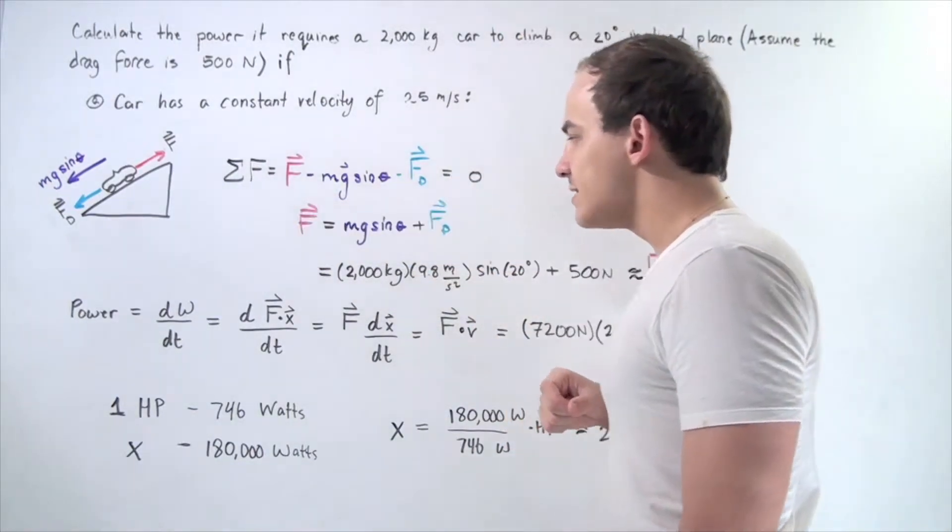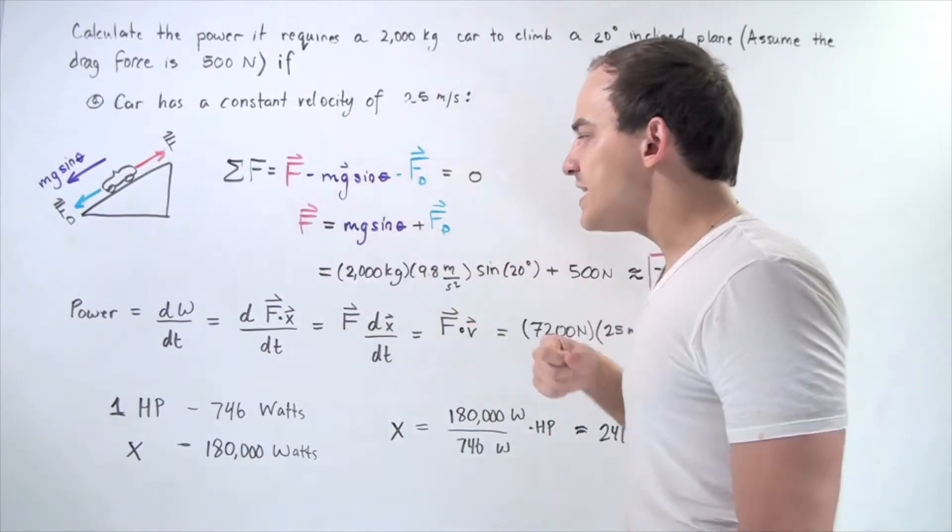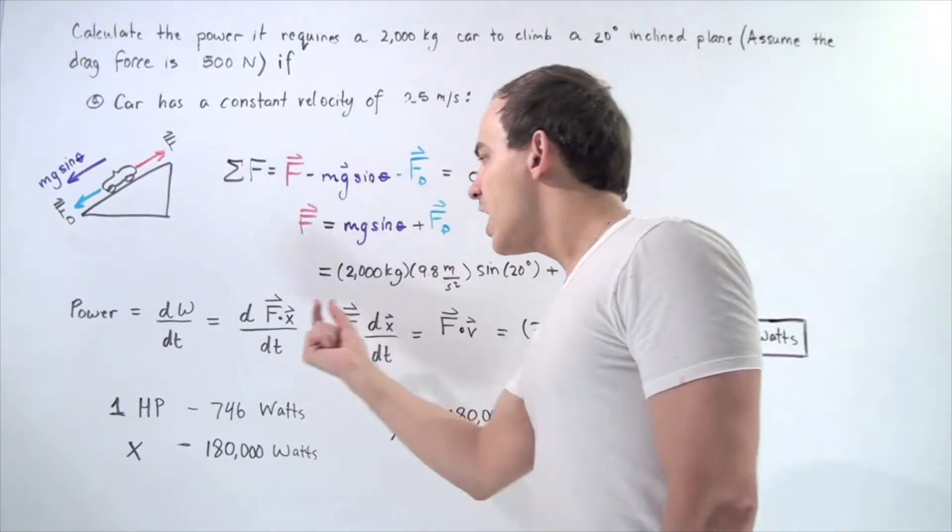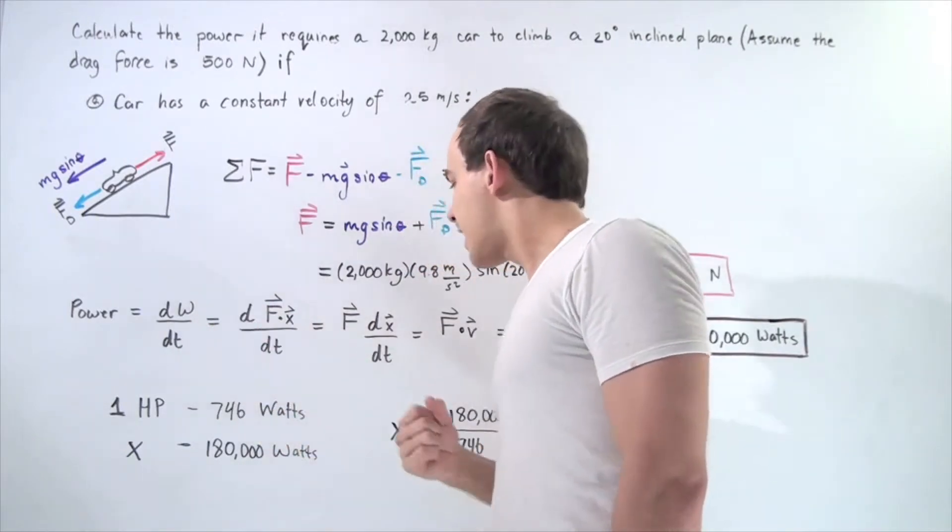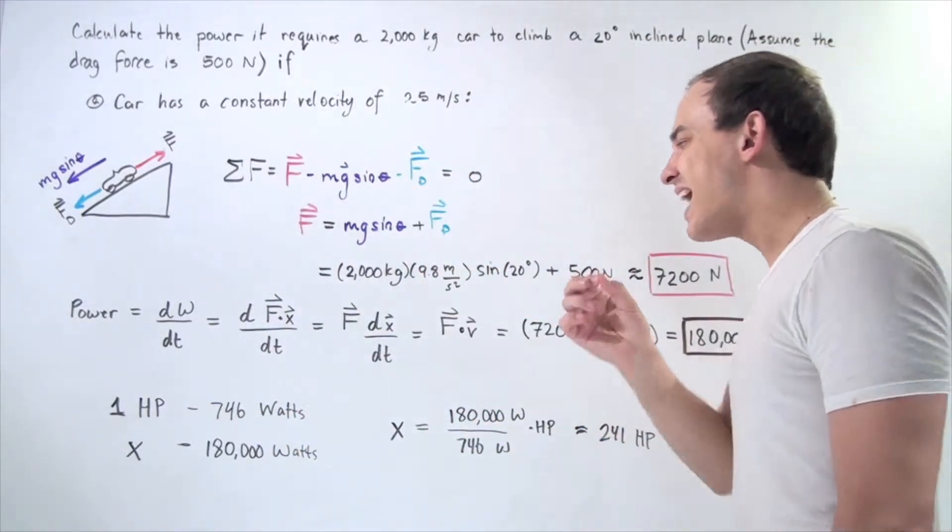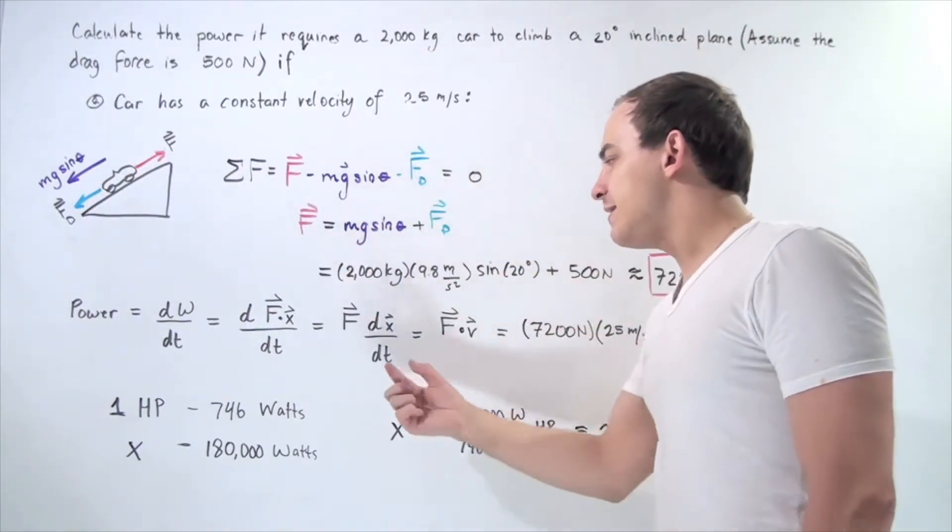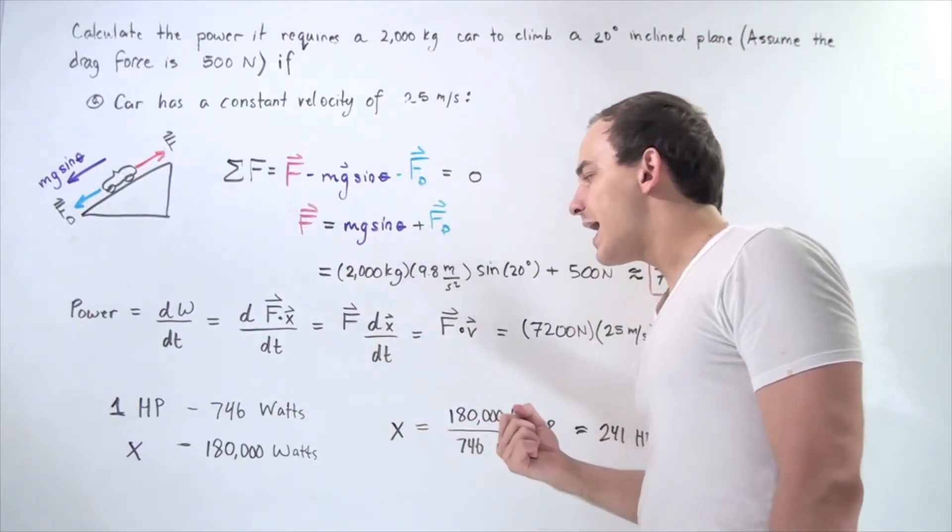We know what the force is. We don't know what our displacement is. But notice, because force is assumed to be constant, we can bring it to the outside. Force times infinitely small change of displacement divided by infinitely small change in our time.